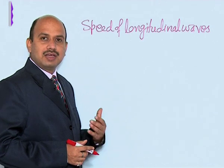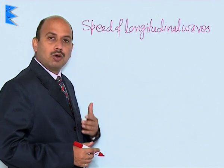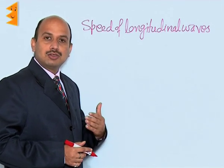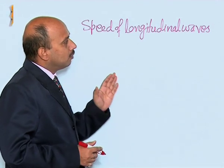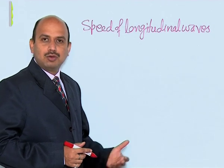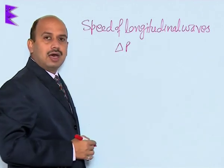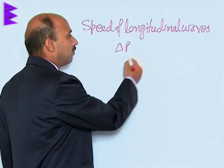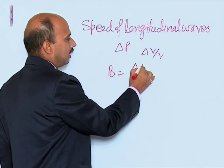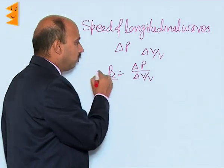When the compressions and rarefactions are formed, the particles of the medium oscillate about their mean position in the direction of propagation of the wave. When compressions and rarefactions are formed, there is a change in pressure and volume. If the change in pressure is delta P and the change in the fractional volume is delta V upon V, then bulk modulus can be written as B = delta P upon (delta V upon V). This is the bulk modulus.